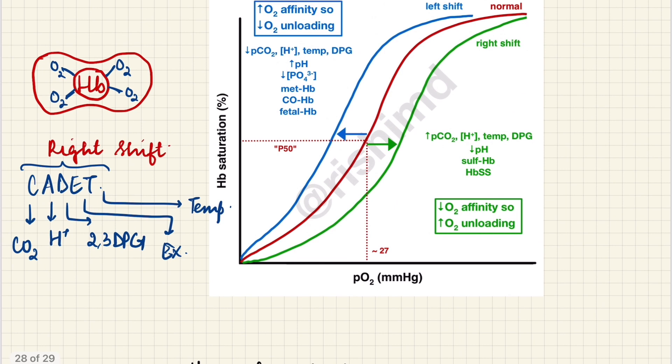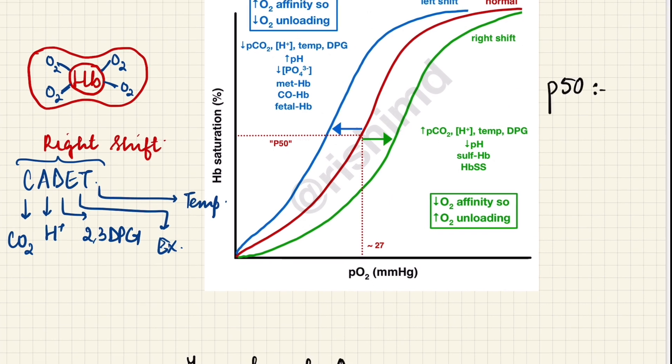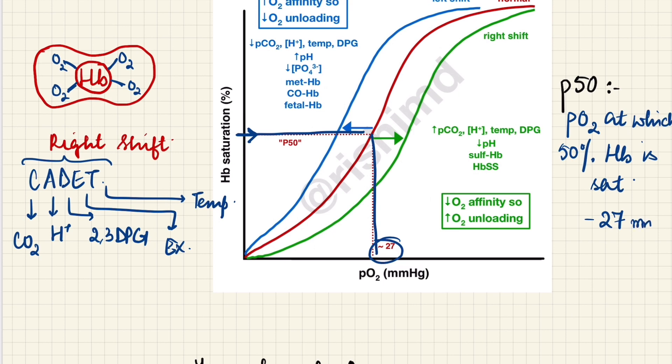Now a very important term: P50. P50 is the value of partial pressure of oxygen at which 50% hemoglobin is saturated. And it comes out to be approximately 27. So at 27 mmHg of oxygen, 50% of the hemoglobin is saturated.